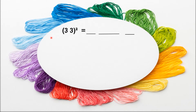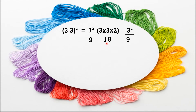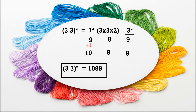Now we will see one example with carryover. For 33 squared: the first number is 3 squared, the last number is 3 squared, and the middle number is 3 into 3 into 2. So 3 squared is 9, 3 into 3 into 2 is 18, and 3 squared is again 9. The middle number has 2 digits, so this 1 will be added to the previous number 9. Going from right to left: 9, 8, and 9 plus 1 is 10. So 33 squared is equal to 1089.